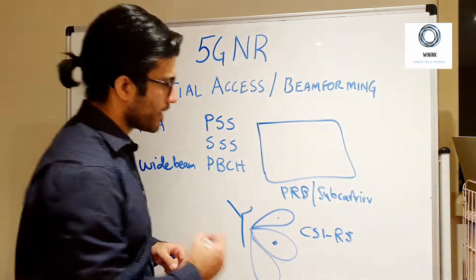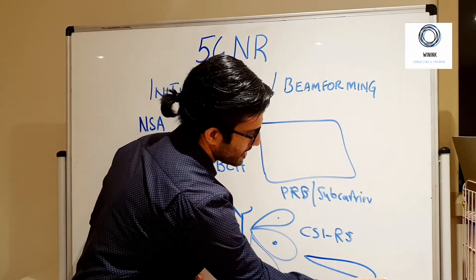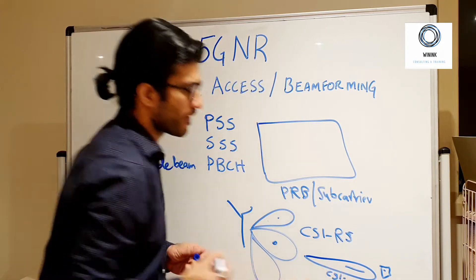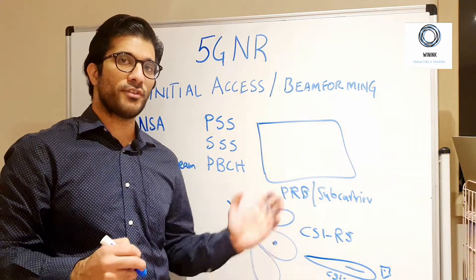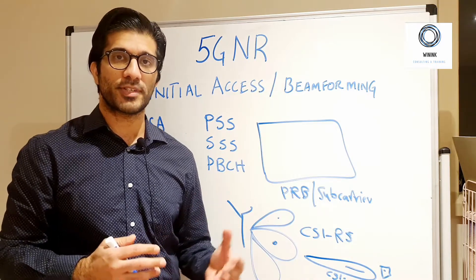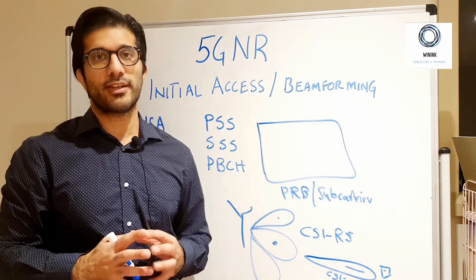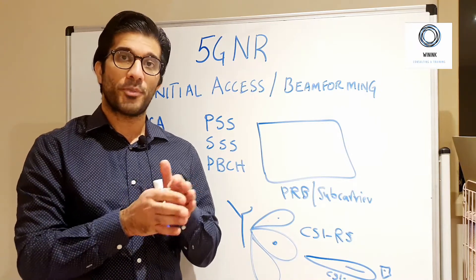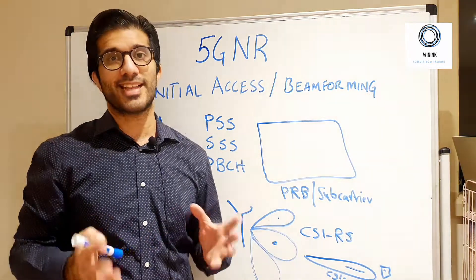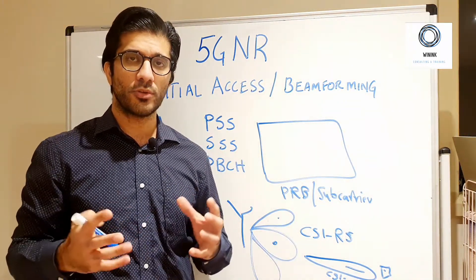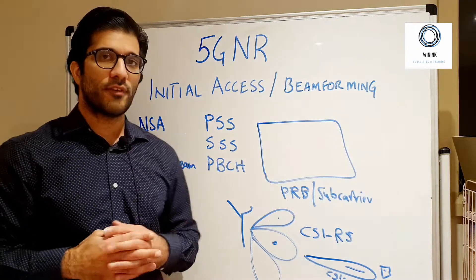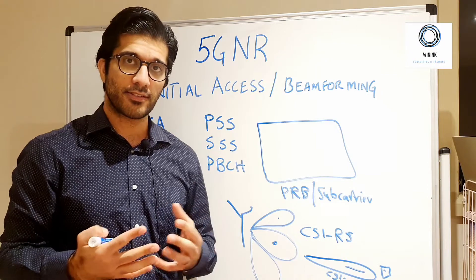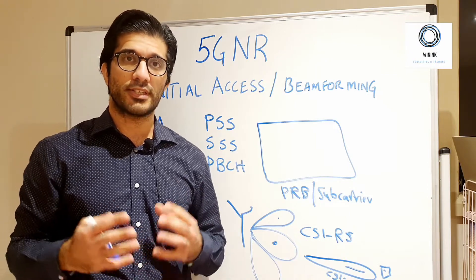Once your mobile is connected to the 5G network and needs to receive data, the narrow beam is used. On the narrow beam, reference signals are transmitted so the channel can be estimated. The narrow beam can be adjusted to a particular user so that all interference is cancelled out.